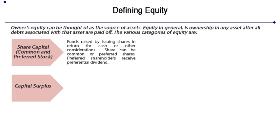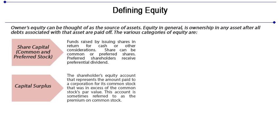Capital surplus is the shareholder's equity account that represents the amount paid to a corporation for its common stock that was in excess of the common stock's par value. This account is sometimes referred to as the premium on common stock or the share premium account. For example, a company issues 1,000 ordinary shares of a nominal value of $1.10 each — that's the face value of the share — at a subscription price of $25 per share. The $15 difference per share raised will go to the capital surplus account or the share premium account.